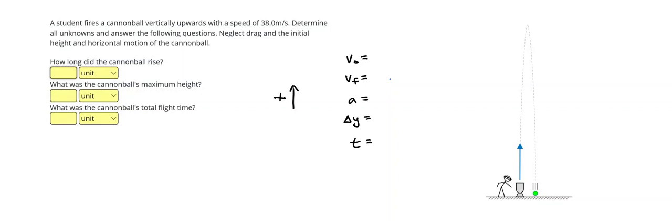A student fires a cannonball vertically upwards with a speed of 38.0 meters per second. Determine all unknowns and answer the following questions. Neglect drag and the initial height and horizontal motion of the cannonball. In this problem, we're analyzing a ball that is going up and down. But to answer these three questions, I think the best approach is actually to only analyze the part of the motion when the cannonball is traveling upwards. So we're going to find these five things for the rise only.